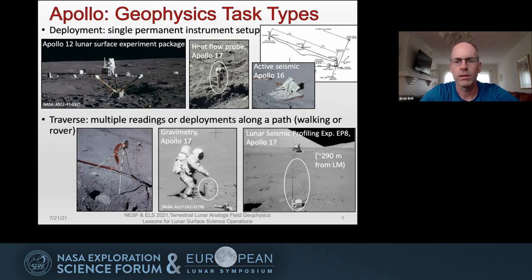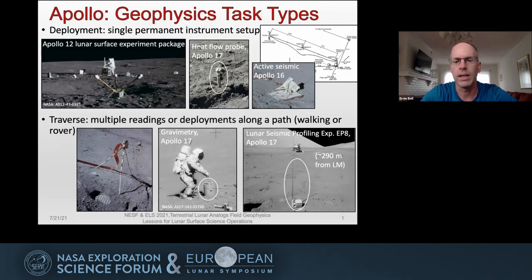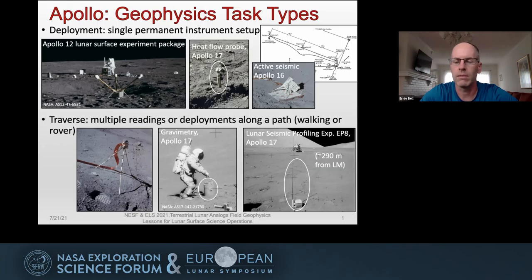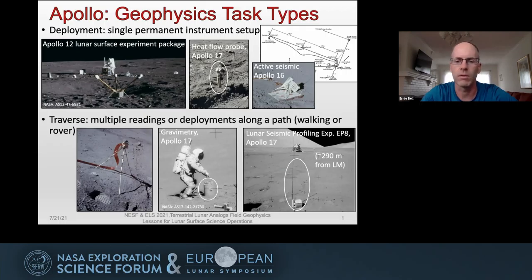The other type could be grouped as a traverse-type task, where you took a reading at one point and then the crew would traverse to another point and take another reading, either on foot or via the lunar rover. This could be things such as magnetometry, gravimetry such as the Apollo 17 crew member there in the middle, or even the lunar seismic profiling experiment of Apollo 17, where the explosive packages were deployed throughout the lunar rover traverse, requiring the traverse to reach proper distances.